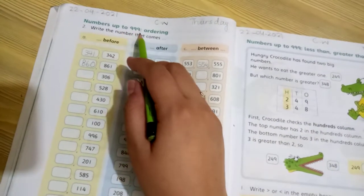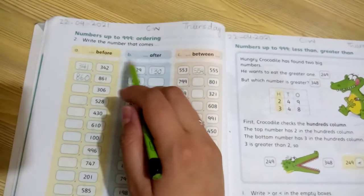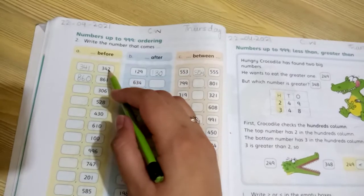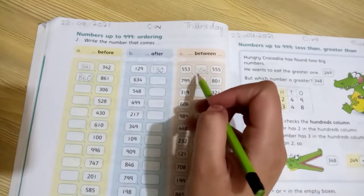Numbers up to 999, ordering. Question number 2 is write the number that comes before, after and between. Before means number se pehle, after means number ke baad, or between means dono number ke darmiyan.